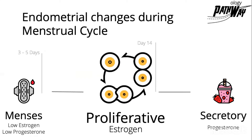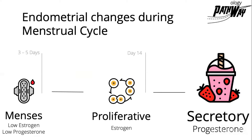After the menses, the endometrium will start the proliferative stage or phase, which is under the effect of estrogen. This happens until day 14, when ovulation occurs. Then the endometrium will start to function and differentiate — this is called the secretory phase.